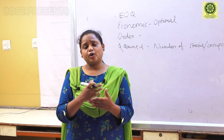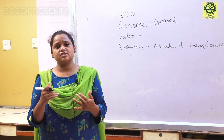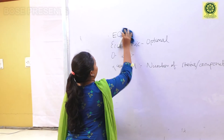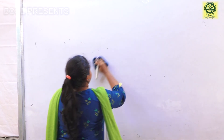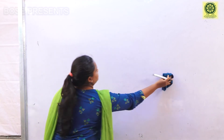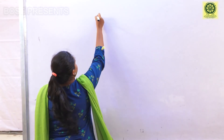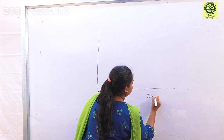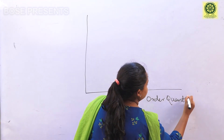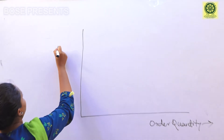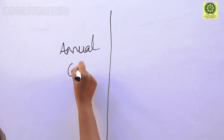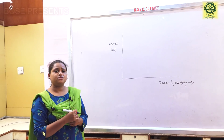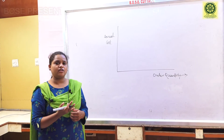So these two costs are inversely proportional to each other. Let me explain with a graph. This is the Y axis and this is the X axis. On the X axis we take order quantity, and on the Y axis we take annual cost. There are two costs associated with EOQ: ordering cost and carrying cost.